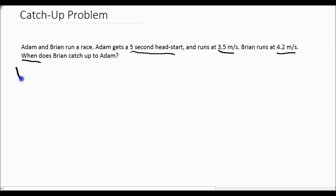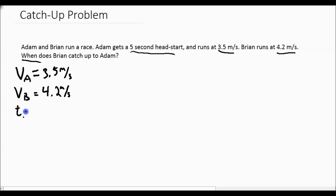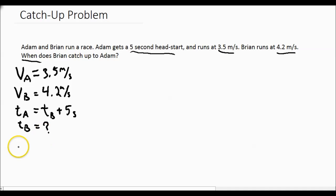Adam's velocity is 3.5 meters per second and Brian's velocity is 4.2 meters per second. We don't know the time exactly, but we do know Adam's time is going to be whatever Brian's time is plus five seconds, because he gets that five-second head start. We do not know Brian's time — that is our unknown. One key thing we do know is that because it is a catch-up problem, they meet at the same exact place, so their distances or displacements will be equal.